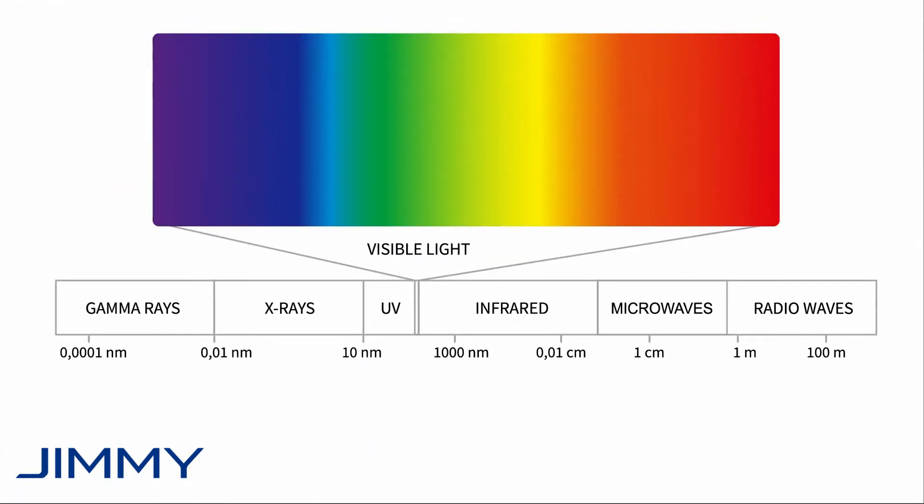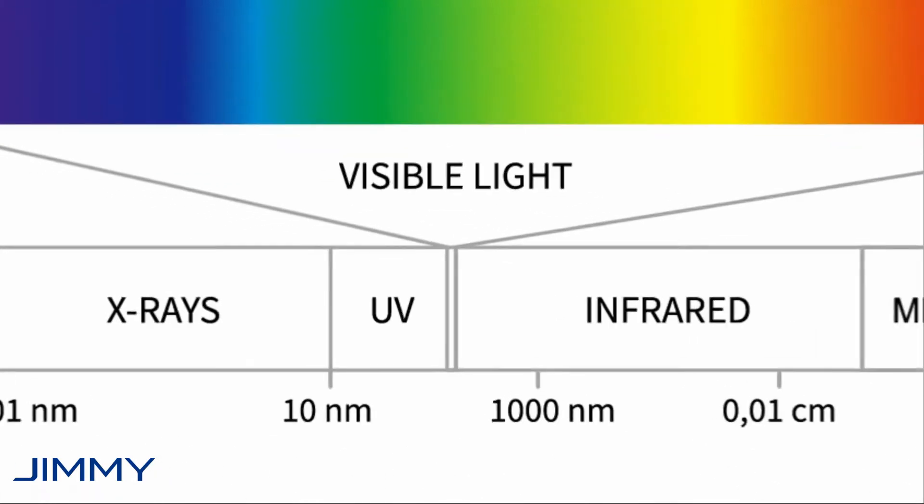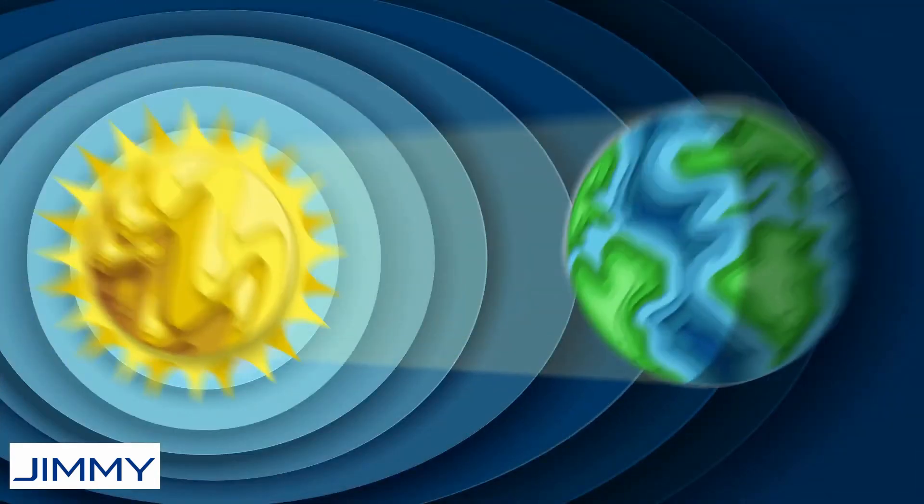Ultraviolet or UV light is part of the electromagnetic spectrum which includes radio waves at one end of the spectrum and gamma rays at the opposite end. When organized by wavelength, UV light falls between visible light and x-rays.